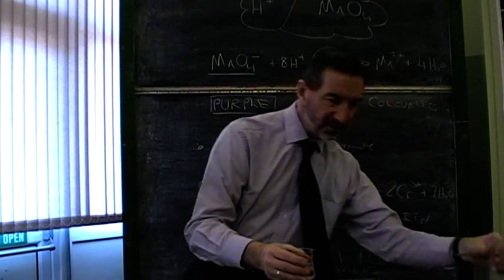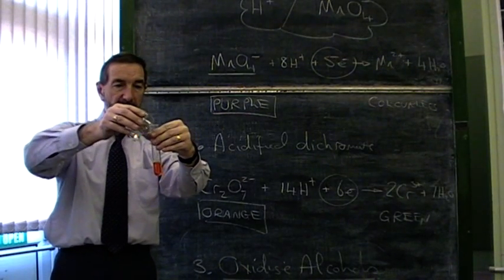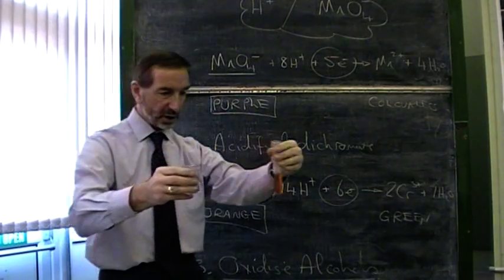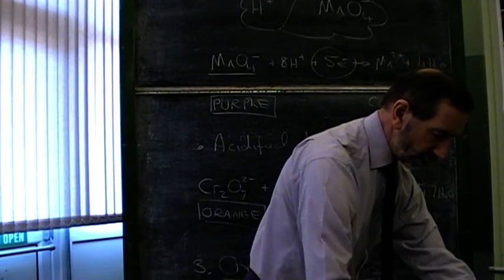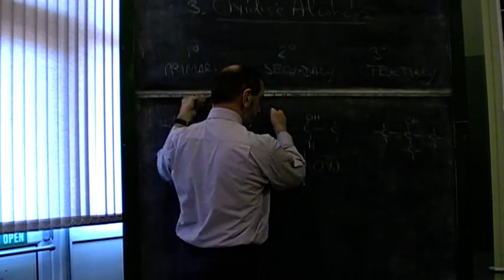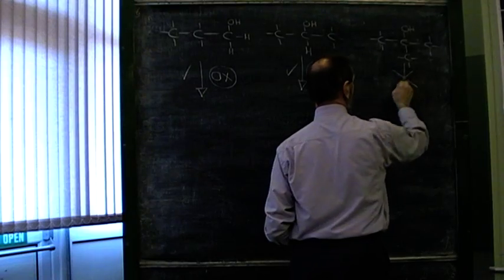And again, just to reinforce that, if we use the other oxidising agent, the acidified dichromate. The same story. No change, no reaction, nothing is happening. So we can see that a tertiary alcohol is not oxidised. It doesn't work. I wonder why.